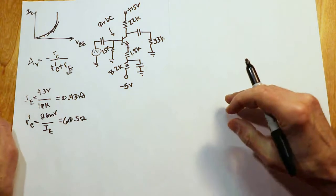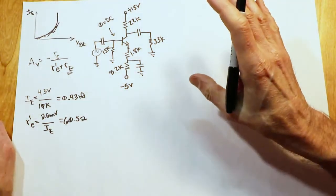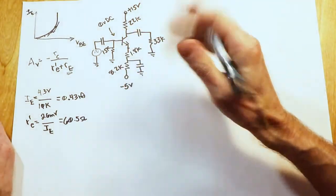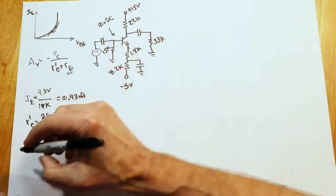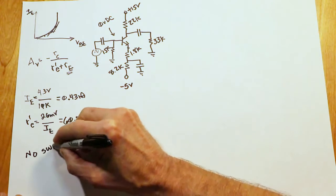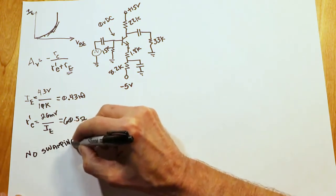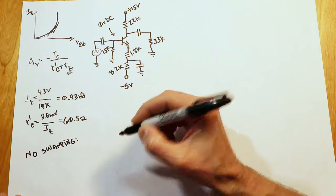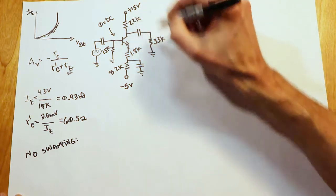Now, let's for a moment just ignore the fact that we have swamping. If we had no swamping, do a little comparison here, we would look at the gain, which is RC.